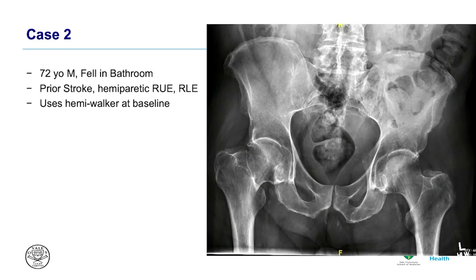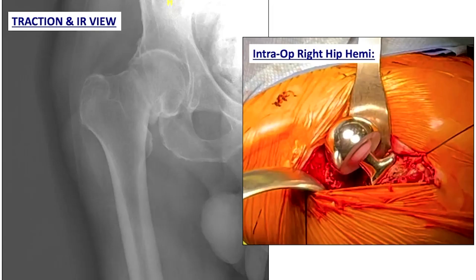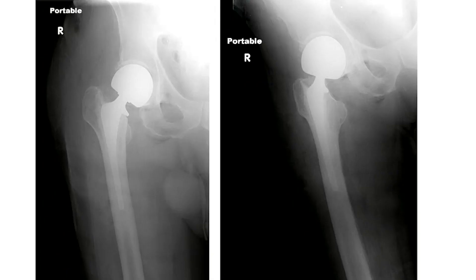Case two: similar presentation — fell in bathroom, prior stroke, osteoporotic, hemiplegic at baseline. A lower-functioning patient who is going to get that cemented stem. This is a nice view showing the capsular limbs being reflected. I have a bipolar head here — to reduce it I tip the head backwards, use the head pusher going down, and with the limbs of the capsule on tension I move the leg slowly as my assistant pushes the head in so it mates beautifully into the acetabulum.